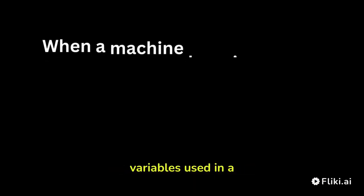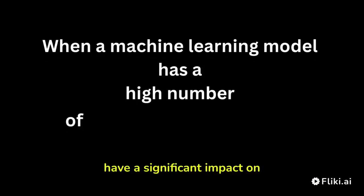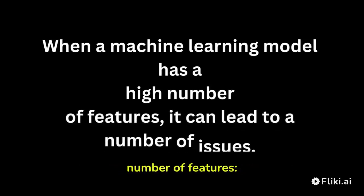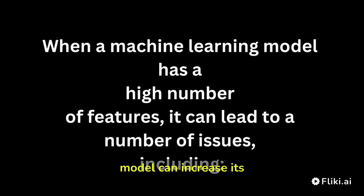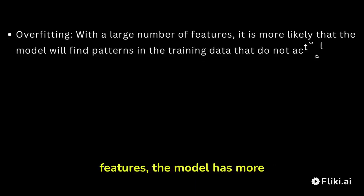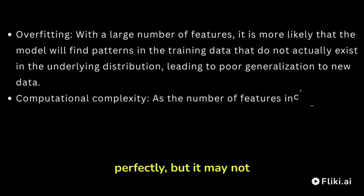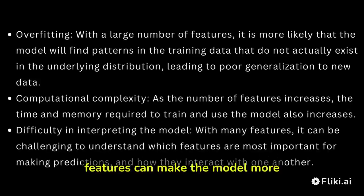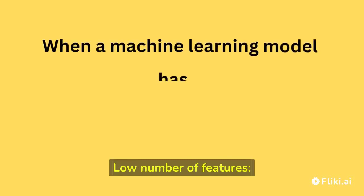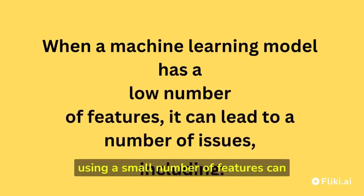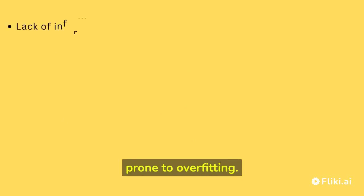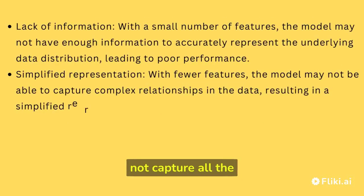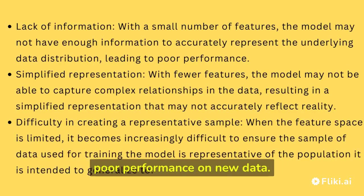The number of features or variables used in a supervised machine learning algorithm can have a significant impact on its performance. Using a large number of features can increase model complexity and make it more prone to overfitting — the model may fit the training data perfectly but not generalize well to new, unseen data, and can also be more computationally intensive and difficult to interpret. On the other hand, using a small number of features can make the model simpler and less prone to overfitting, but it may not capture all important relationships in the data, leading to underfitting and poor performance on new data.